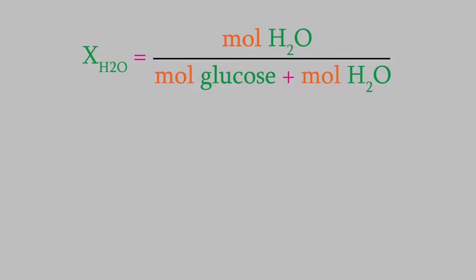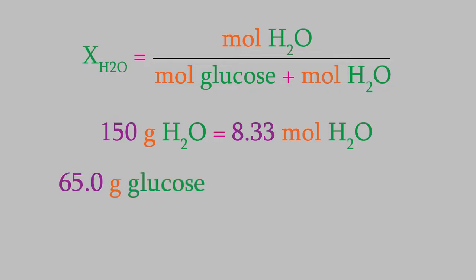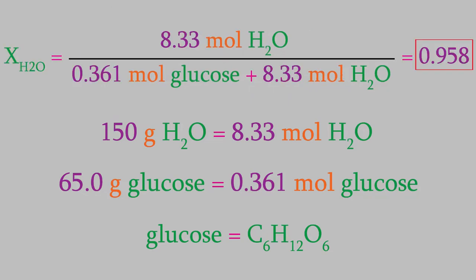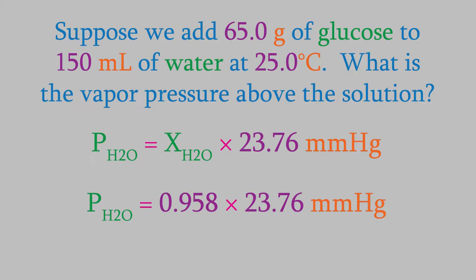So, we have 150 milliliters of water. Since the density of water is about 1 gram per milliliter, this is 150 grams. Using the periodic table, we find out that that's equal to 8.33 moles. Meanwhile, we have 65.0 grams of glucose, which has the formula C6H12O6. Using the periodic table, we find out that that's 0.361 moles. If we plug these into our formula for the mole fraction, we get 0.958. Now we can use that in our equation for the vapor pressure, and we get 22.77 millimeters of mercury for our vapor pressure. So that's the vapor pressure of the water above our solution. It's a little lower than it would have been for pure water.